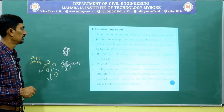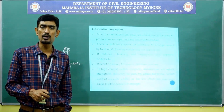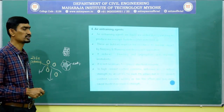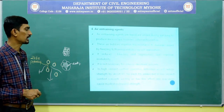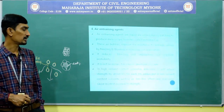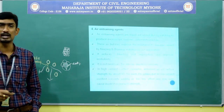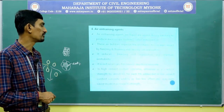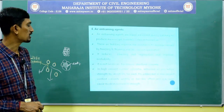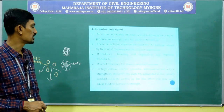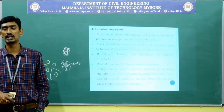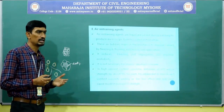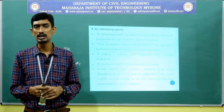Air entraining agents reduce bleeding and segregation and improve workability. It is not necessary for interior structural concrete. In high cement content concrete, entrained air will reduce strength by about 5% for each 1% added. However, in low cement content concrete, adding air has less effect and may even cause a modest increase in strength. This is regarding concrete chemicals or chemical admixtures — various concrete chemicals have come into picture based upon the requirement, and companies like FOSROC and BASF manufacture various concrete chemicals to enhance the properties of concrete.